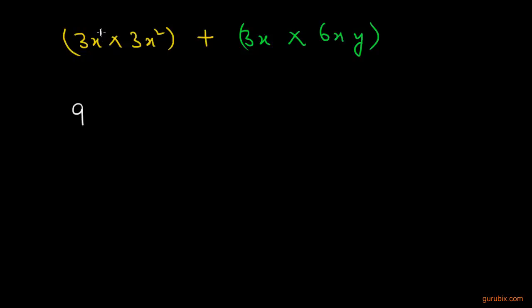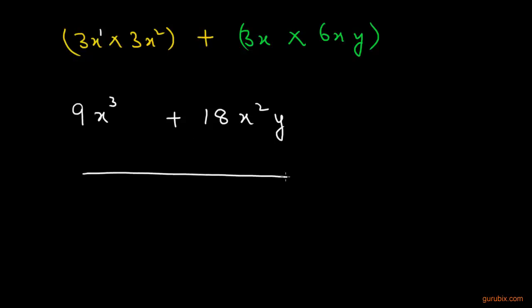So 1 plus 2 gives us x³. Then, multiplying 3 with 6 gives 18, and multiplying x with x gives x², with nothing to multiply with y. So the result is 9x³ plus 18x²y. This is the solution.